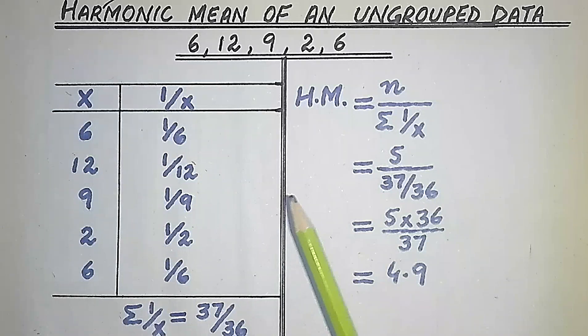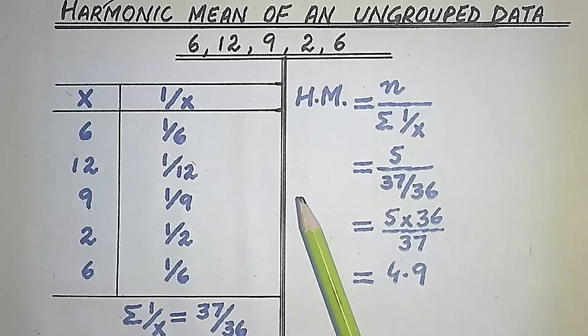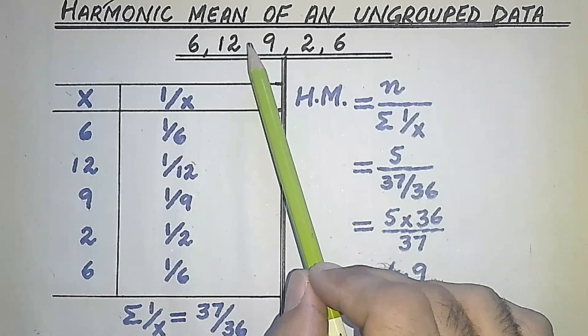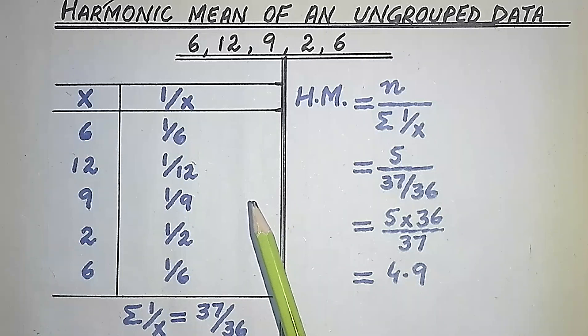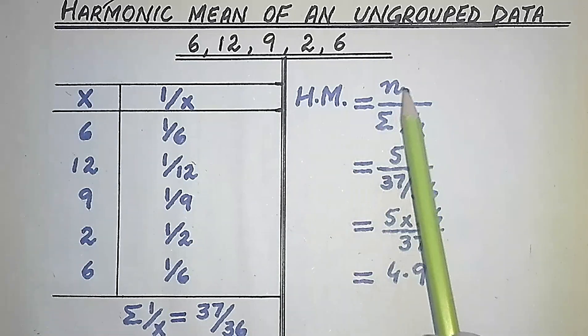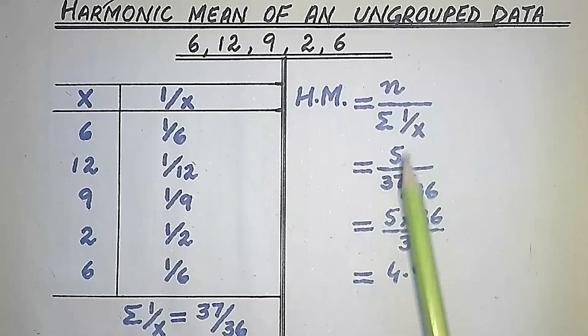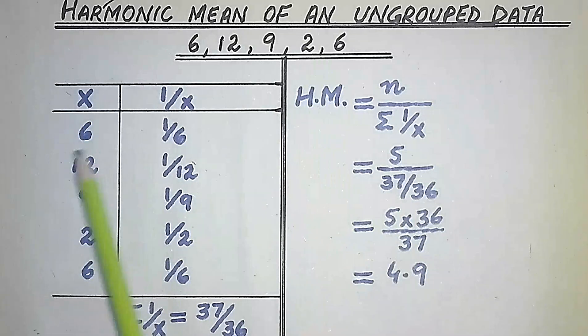In this video, we are going to discuss how to find the harmonic mean of ungrouped data. This is an ungrouped data, and the formula to find harmonic mean is HM equals n over sigma 1 over x. We'll take this ungrouped data and work through the process.